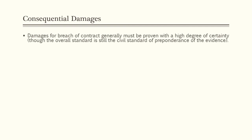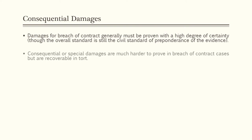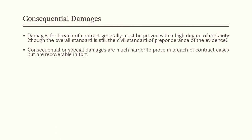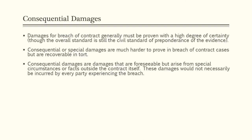Next we'll discuss consequential damages. Damages for breach of contract generally must be proven with a high degree of certainty, though the overall civil standard remains preponderance of the evidence. Consequential or special damages are much harder to prove in breach of contract cases. Consequential damages are damages that are foreseeable but arise from special circumstances or facts outside the contract itself — damages that would not necessarily be incurred by every party experiencing the same breach. Foreseeability is found where loss follows a breach in the ordinary course of business or results from special circumstances the breaching party has reason to know.